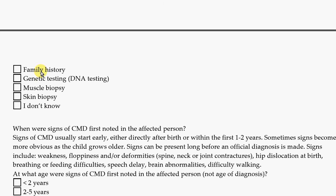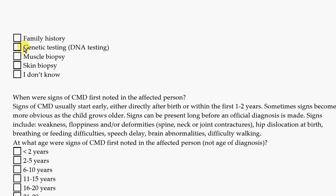A family history diagnosis means you have other family members with this disease, making it easy to diagnose. Other methods include genetic testing, a muscle biopsy — which is a small surgery to remove a piece of muscle that's examined under a microscope — or a skin biopsy where a small amount of skin is removed and analyzed. If your doctor never told you exactly how they made the diagnosis, you can click here if you don't know.